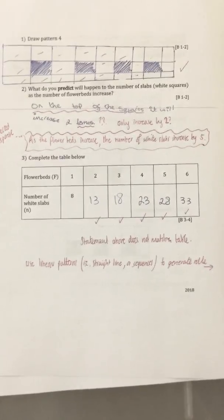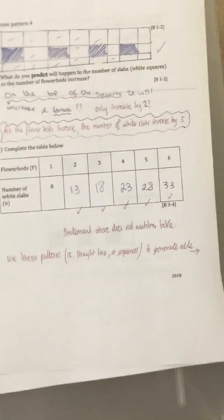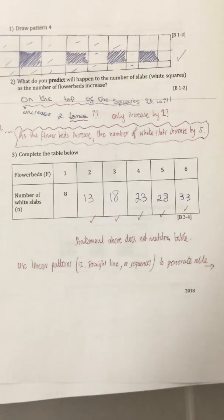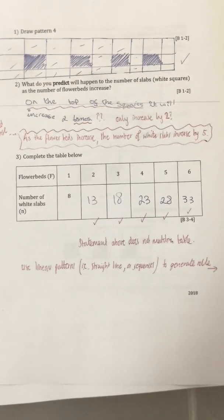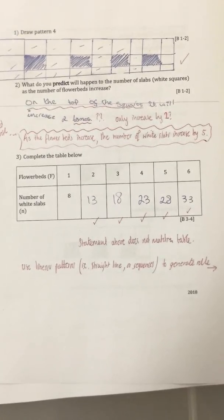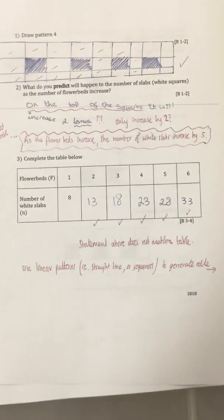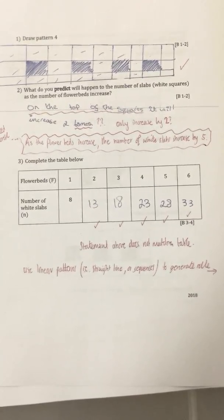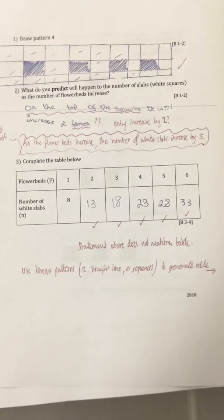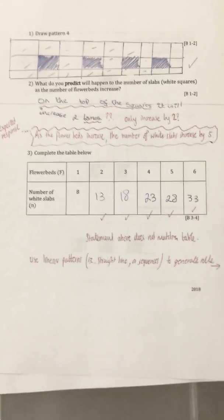A common mistake is students just say the pattern goes up by 5. That's not what we're looking for in grade 6, because if I ask for the 150th flower bed, you're not going to add 5 all the way up to 150. Some students do weird multiplication — like 4 flower beds is 23 and 5 flower beds is 28, so 5 goes into 150 thirty times, so they do 28 times 30. It gets close but doesn't create a general rule, so they're not showing pattern investigation.